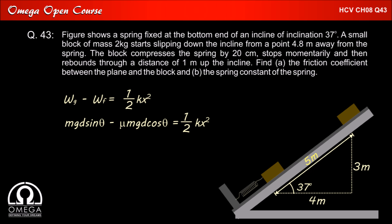Which implies mg d sin theta minus mu mg d cos theta is equal to half kx square. As we can see in the diagram, d sin theta is 3 meters and d cos theta is 4 meters. Also as per the question, maximum compression in the spring is 20 centimeters i.e 0.2 meter.